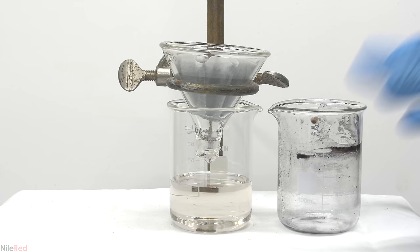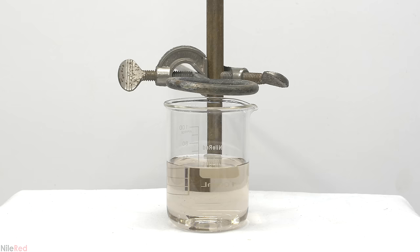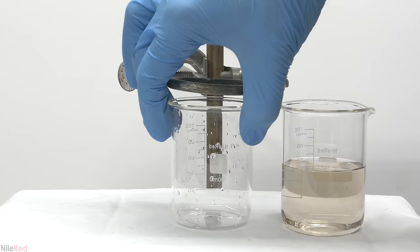Once everything is filtered through I wash the beaker with a little bit of distilled water. The beaker washing is then also used to wash the filter paper. I didn't like that the solution was still colored and I saw some carbon floating around so I decided to filter it again.